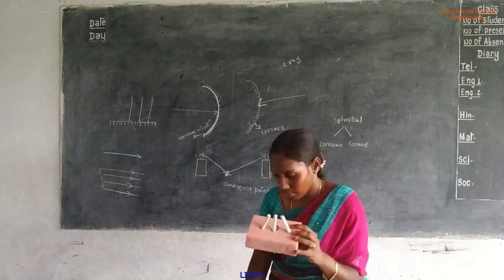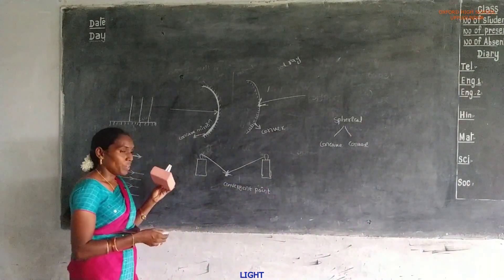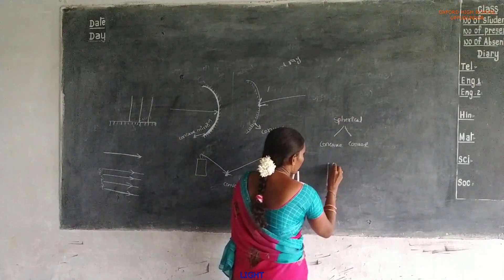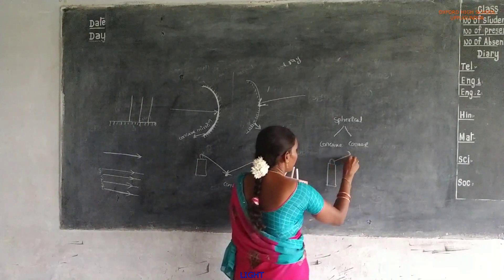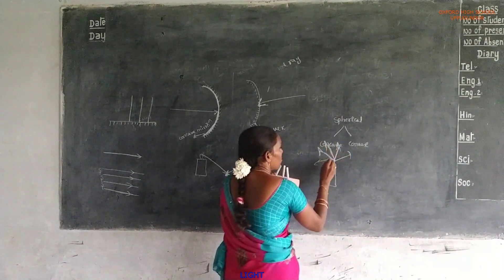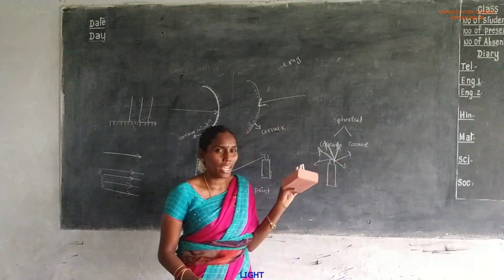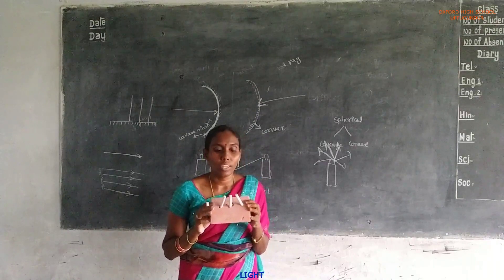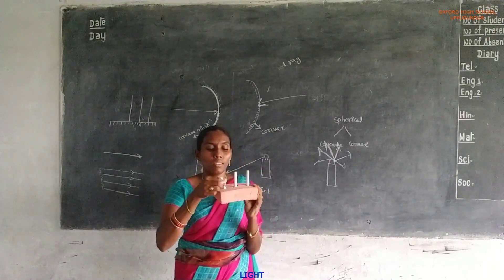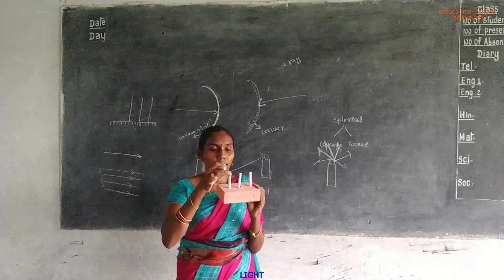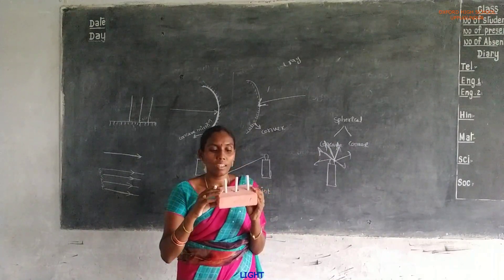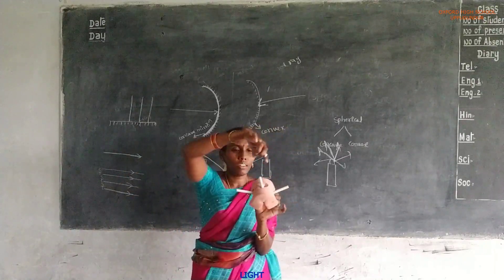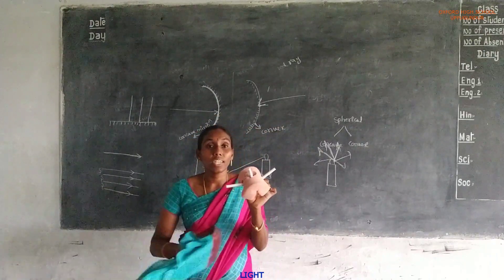Divergent beam means rays are coming from the same point but are moving in different directions. For example, this is a candle. Different light rays are coming from the candle in different directions. Those rays are called a divergent ray or divergent beam. These light rays move in this direction, these are moving in this direction, and these are moving in this direction — these are called a divergent beam.